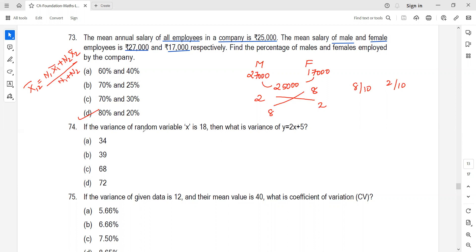Variance of a random variable is 18. We know if Y equals A plus BX, then variance of Y equals B square into variance of X. B is 2 on comparison. So 2 square into variance of X equals 18. Variance is 72. According to me, the answer for 74 is D.